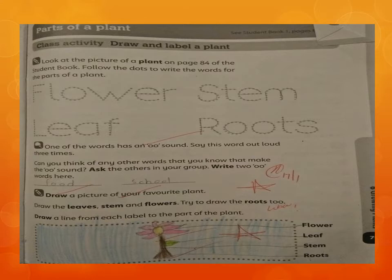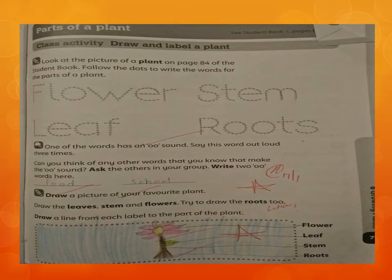Name some more words: cool, fool, pool — there are so many words which have the 'oo' sound. Next, draw a picture of your favorite plant. Draw the leaves, stem, and flowers. Try to draw the roots too. Draw a line from each label to the part of the plant. Make sure to show all four main parts, then color it and match it with its name.